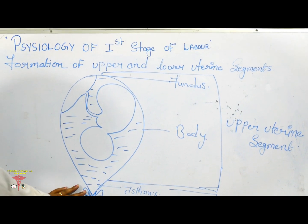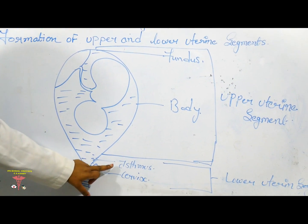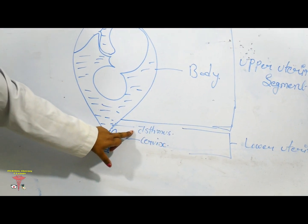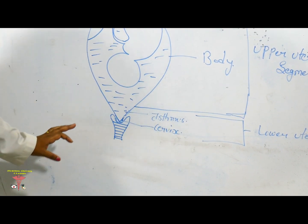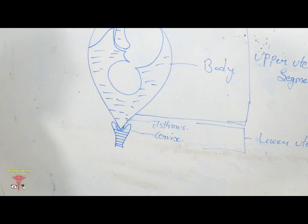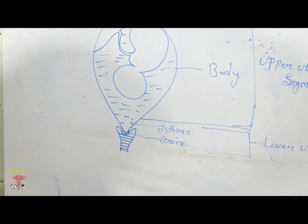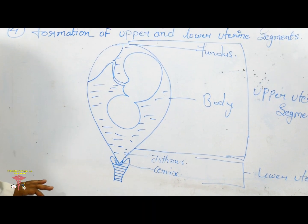The lower uterine segment is made from the isthmus and cervix and becomes elongated. It is a very thin muscular area.